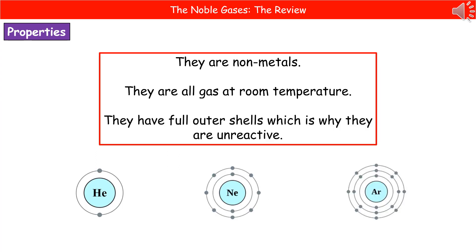A couple of key properties that we need to remember about our noble gases. Firstly, they're non-metals, as evidenced by the fact they're on the right-hand side of the periodic table. As their name suggests, they are all gas at room temperature. And they've all got a full outer shell of electrons, which is the reason why they're unreactive — because if the outer shell is full, then they will not react with other things.